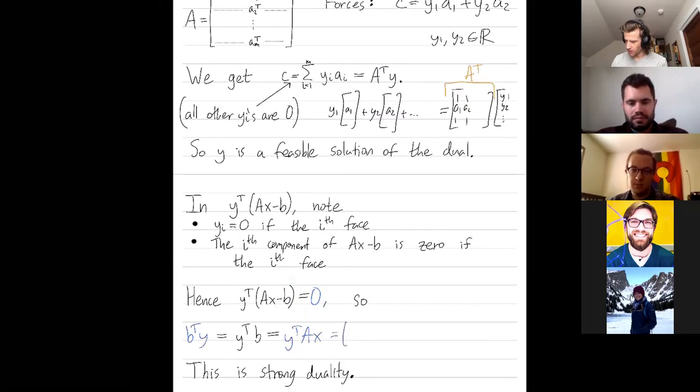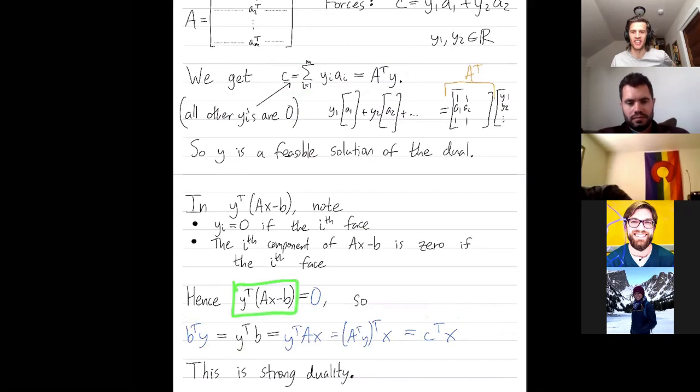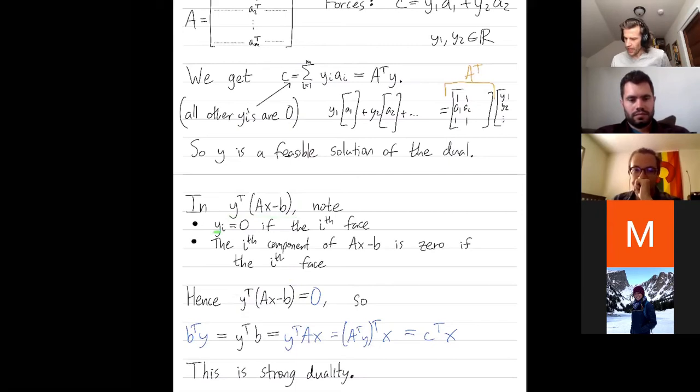And then how am I going to proceed? This is the same as A transpose Y transposed times X. And what is A transpose Y? A transpose Y is just C. So I'm going to end up with strong duality. What I was trying to maximize in my original problem is equal to what I'm trying to minimize in the dual. So that's why I'm considering this strange equation. If I can show this is zero, then I have strong duality. So let's observe why this is zero.